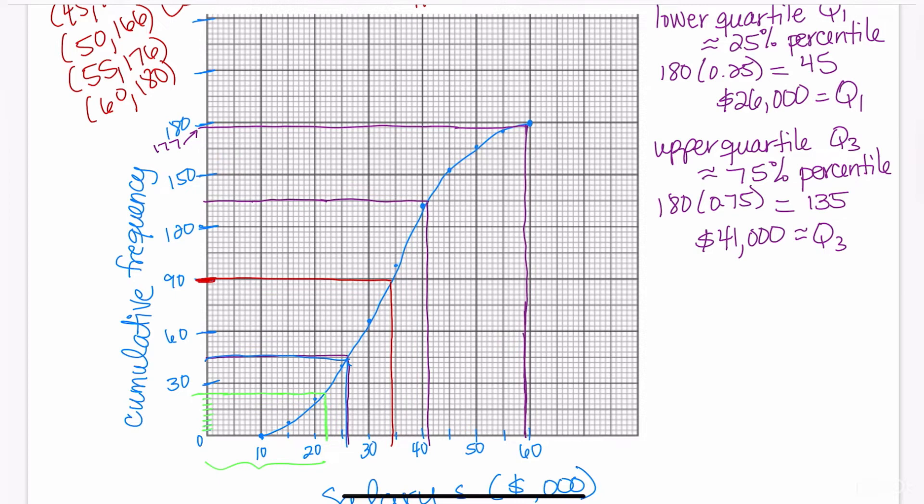We did the same thing to figure out the third quartile. We went 180 times 0.75 is 135. So we found 135. We went straight across until we touched the graph. As soon as we touched the graph, we came straight down and we were able to determine the third quartile was 41,000.